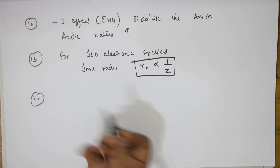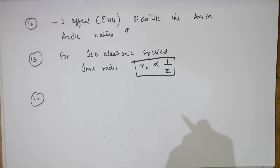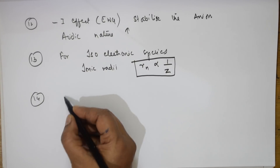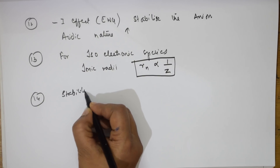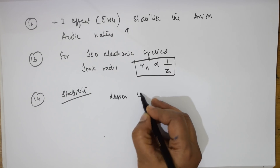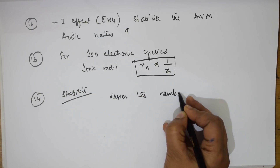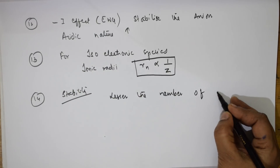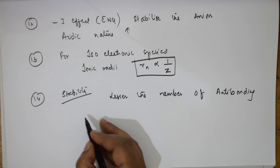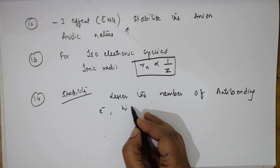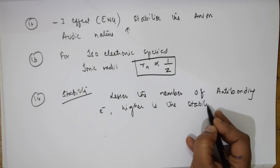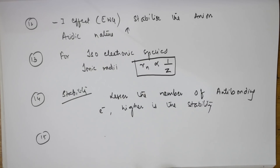Speaking in terms of stability: lesser the number of anti-bonding electrons in the given ion, higher is the stability. Remember this — it's a very important concept.